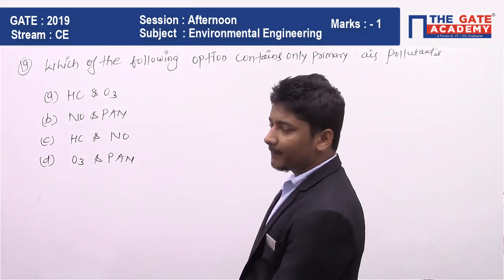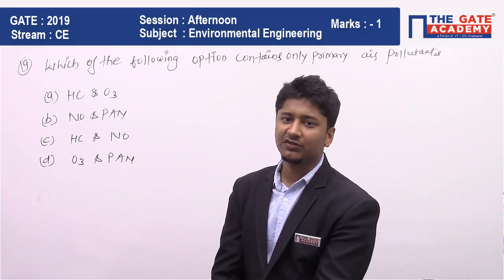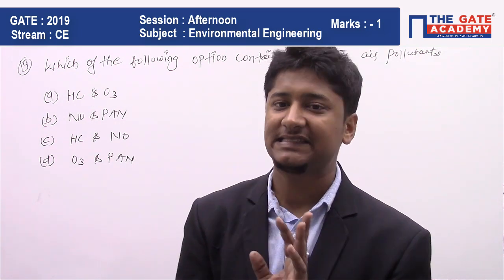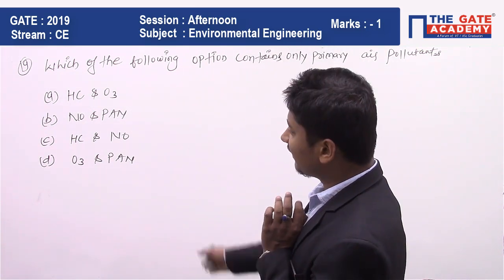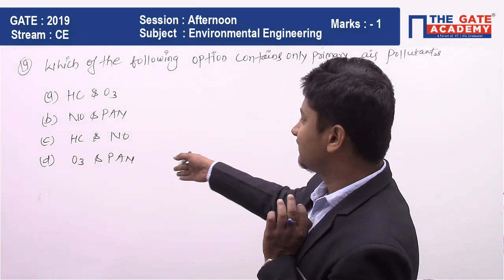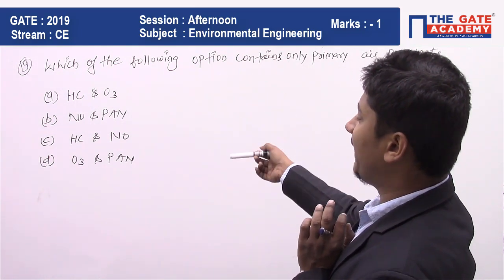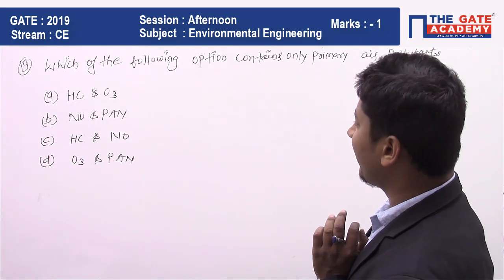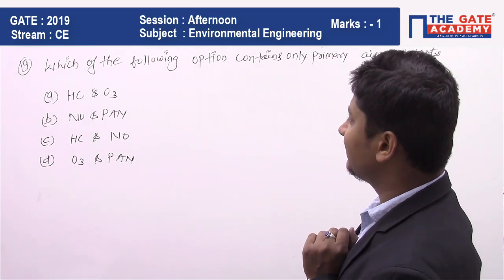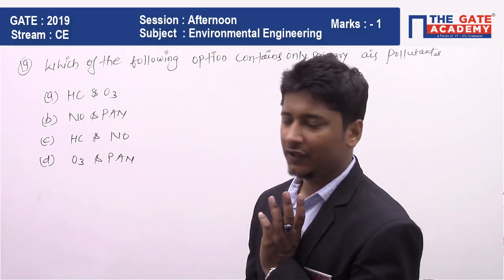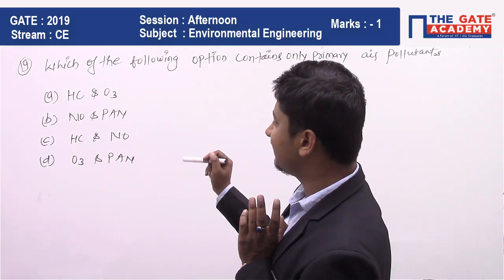This is a very easy one-mark question — you don't have to think for even 30 seconds. If you look at the right-hand side of the options, you will find O3, PAN, NO, and PAN appearing across options A, B, and D.